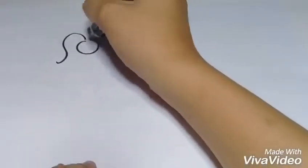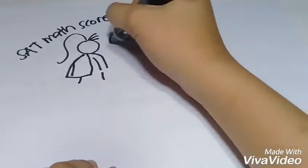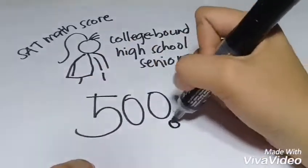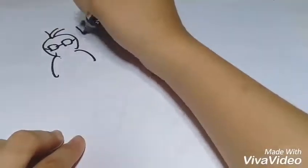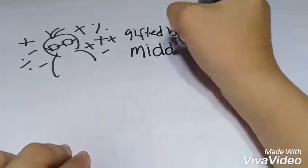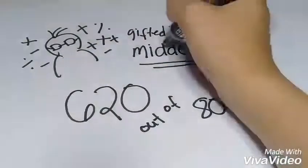Whereas the average scholastic aptitude test SAT math score for college-bound high school seniors is 500 out of 800, the mathematically gifted boys' average SAT math score in middle school was 620 out of 800.